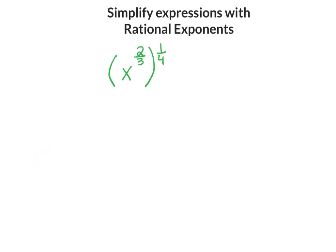Here's the power-to-a-power property: x to the power of 2/3, raised to the power of 1/4. This property tells you to multiply exponents, so this is x to the power of 2/3 times 1/4. Multiplying straight across gives x to the power of 2/12, which simplifies to x to the power of 1/6, or the sixth root of x.